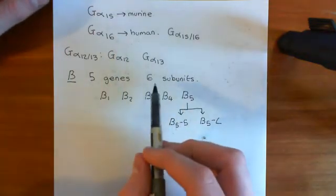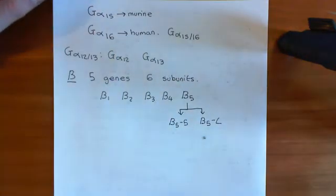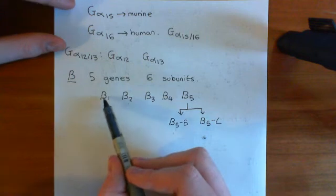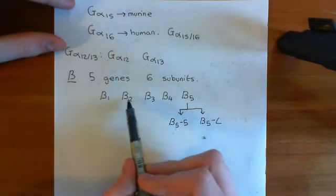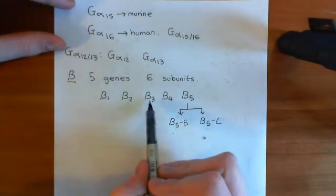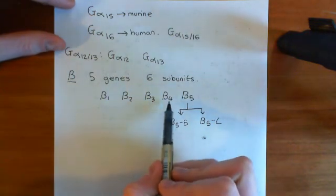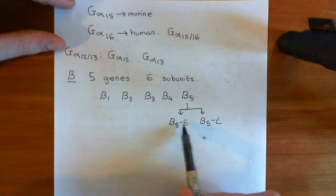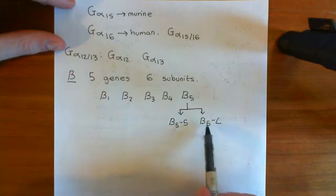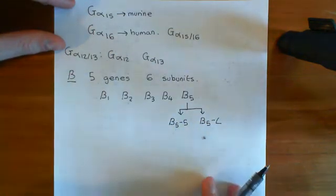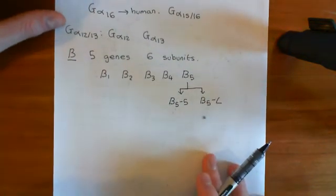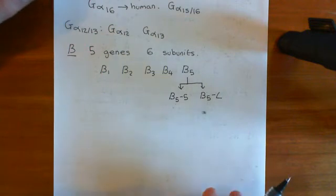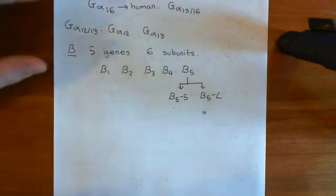Overall you can produce six different beta subunits: the beta 1 subunit, the beta 2 subunit, the beta 3 subunit, the beta 4 subunit, the beta 5S subunit, and the beta 5L subunit. So those are our six different beta subunits.